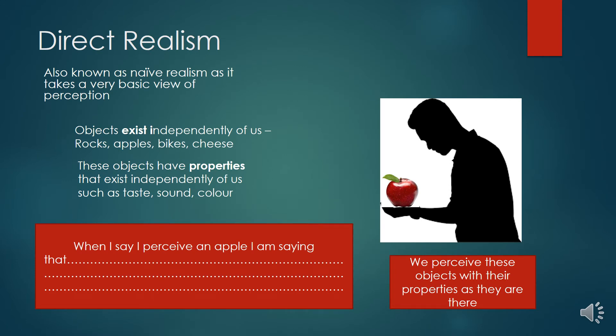So let's start by getting into direct realism. This isn't the first time you've looked at realism — we've just looked at it for metaethics, and we talk of realism in the same way. Direct realism is the most basic theory of perception, and it's also known as naive realism. This is the idea that objects like tables and apples exist independently — mind independently. So things like rocks, apples, bikes, cheese are out there in the world, and these objects have properties that exist independently of us: taste, sound, colour, shape. When we perceive objects such as books, cups, apples, we perceive these objects as they are, with their properties.